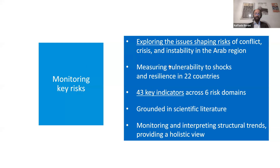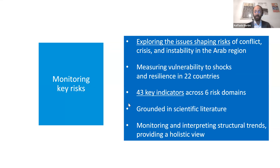We measure vulnerability to shocks and resilience across all our countries using 43 indicators across six risk domains and three main pathways. The decision to consider these indicators, domains, and pathways is grounded in scientific literature and literature review — not only focused on the Arab region, but more broadly on conflict-related issues in developing contexts. This allows us to monitor and interpret structural trends and provide a holistic view.